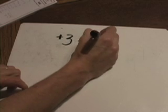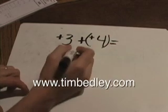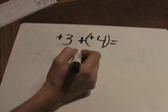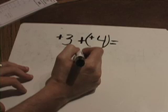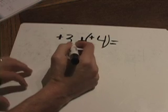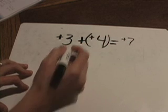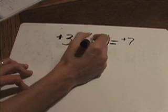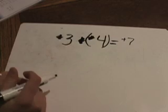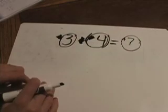Let's start with a simple problem: positive 3 plus a positive 4. Most of the time they'll put parentheses around the positive 4, separating the two signs from each other. But this is just a simple problem like what you've been doing for many years. What I want you to do with problems like this is get rid of any plus signs — just scribble those out. So what we really have is a 3 and a 4, and 3 and 4 together makes 7.